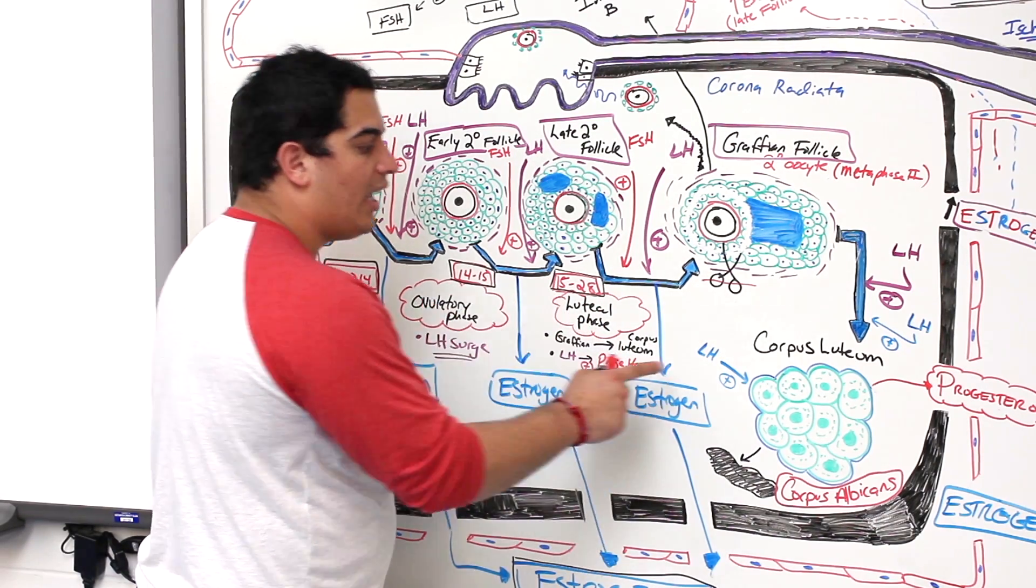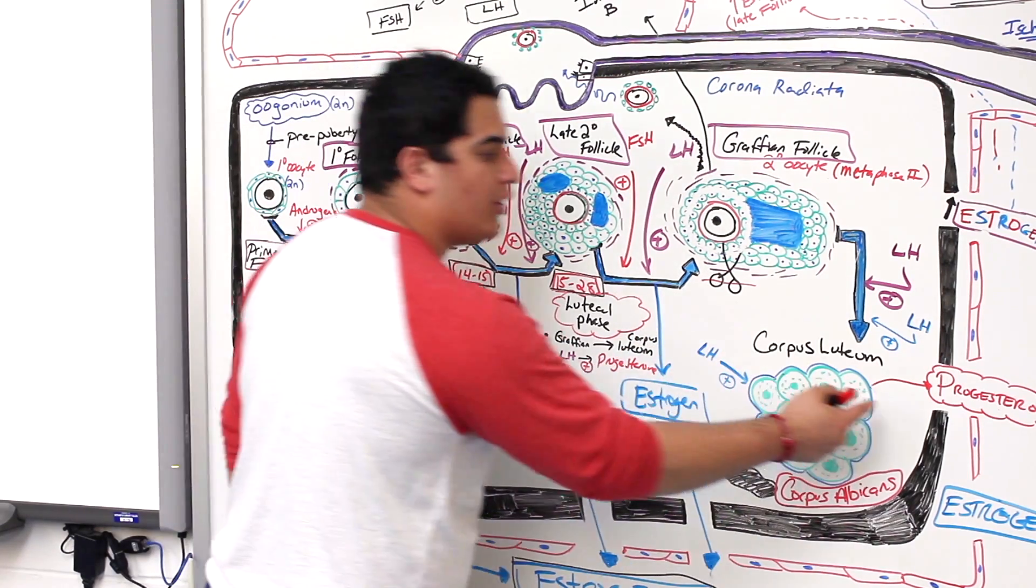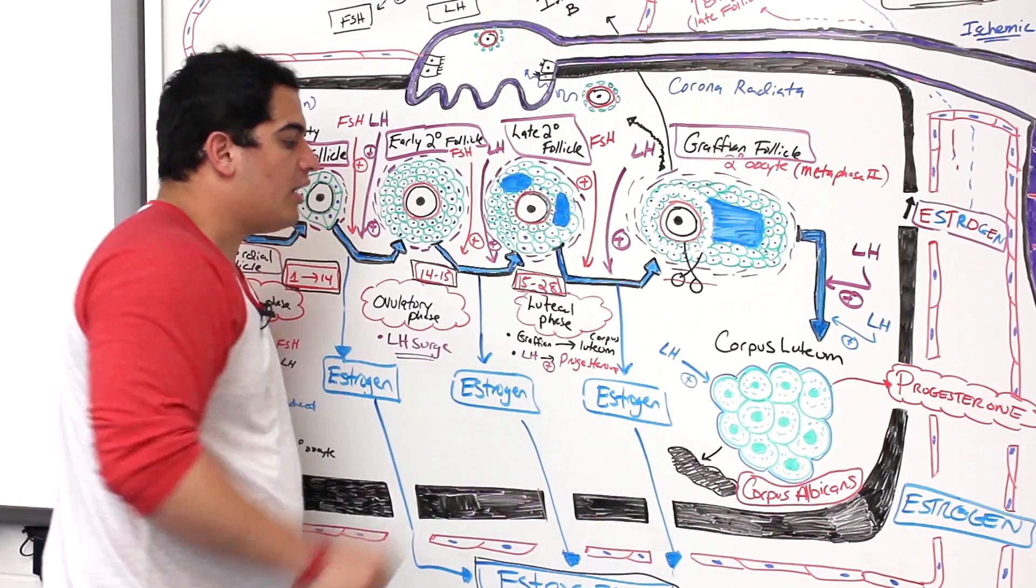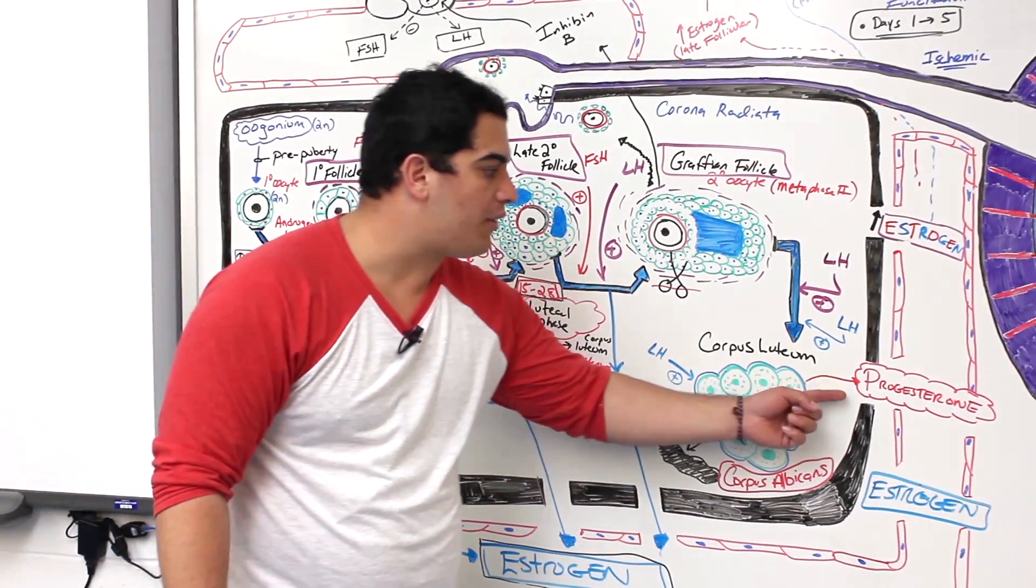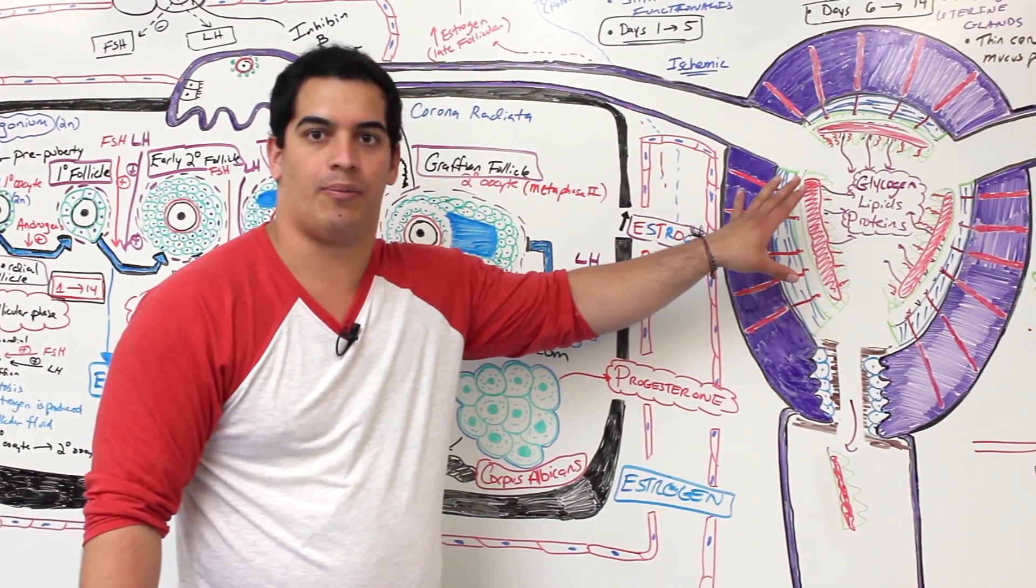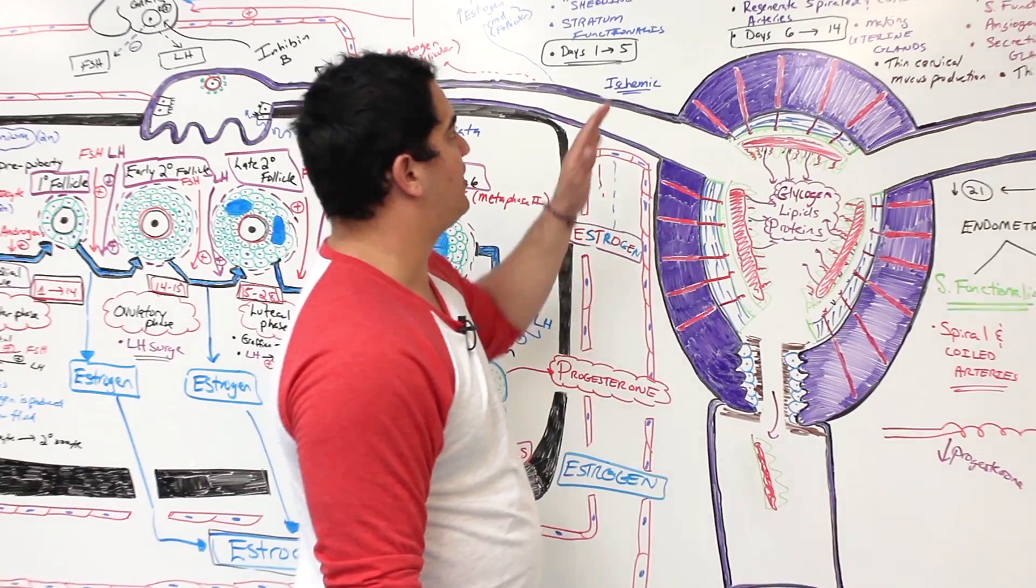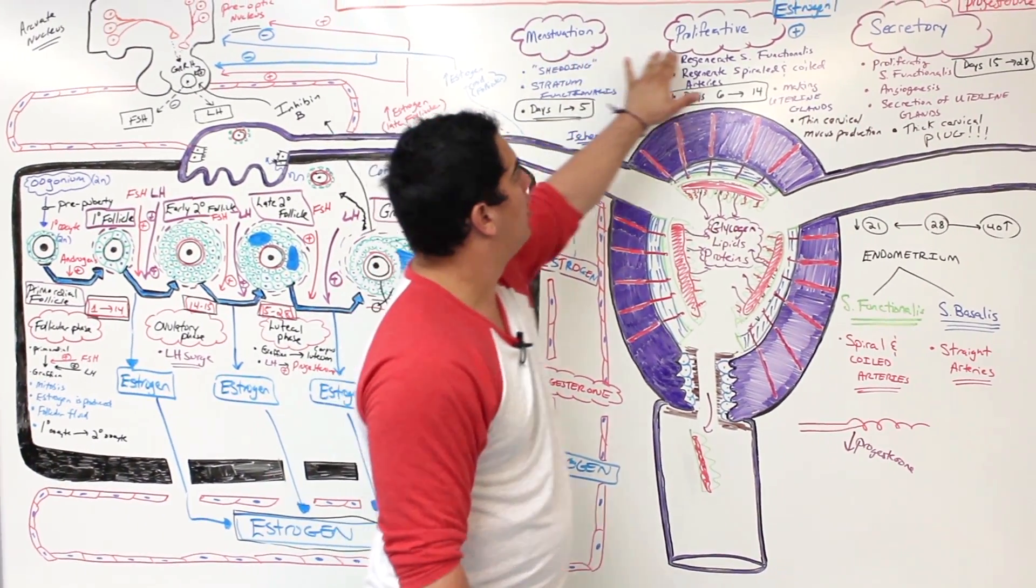Luteinizing hormone is stimulating the corpus luteum to produce progesterone. Now let's follow this estrogen and progesterone and see its effects on the menstrual cycle. The menstrual cycle consists of three phases: the menstruation phase, which is days 1 to 5, the proliferative phase, which is days 6 through 14, and the secretory phase, which is days 15 through 28.